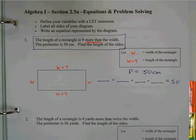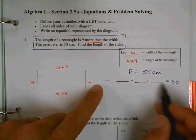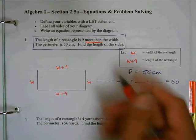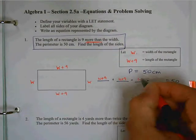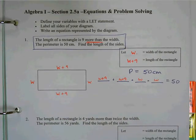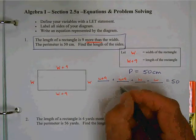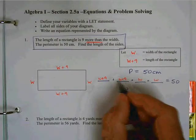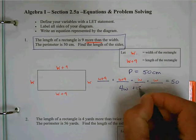What am I going to put in my four blanks? What would my first blank be, or my four blanks? W plus 9 plus W plus 9 plus W plus 9 plus W. How many total Ws do I have? I have four Ws. 9 plus 9 is 18 equals 50.